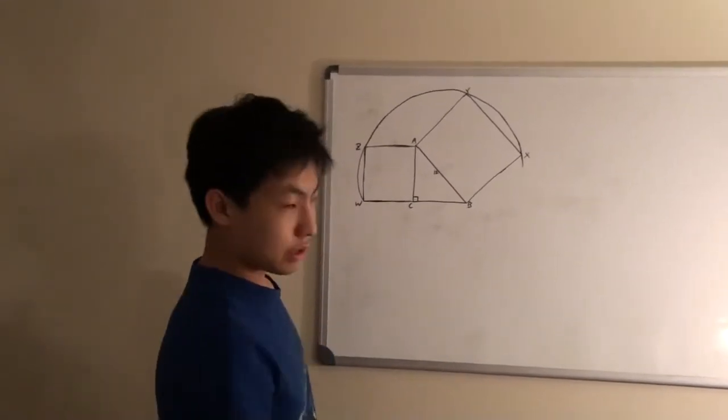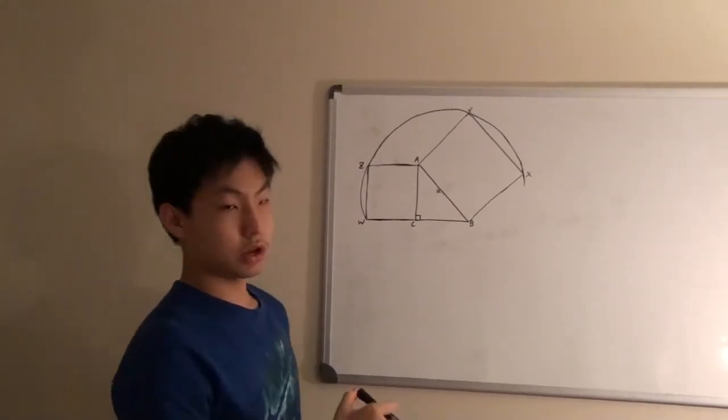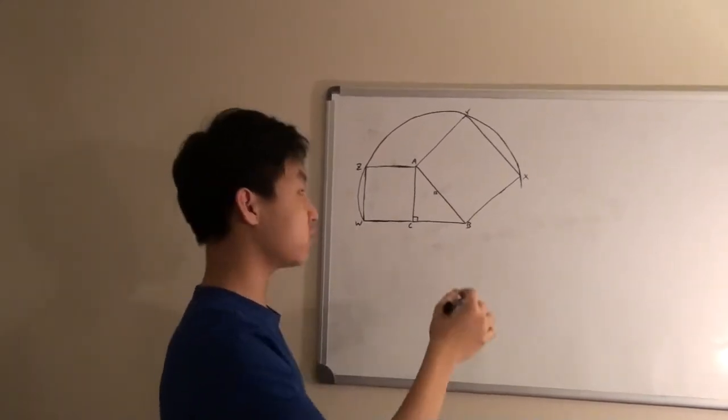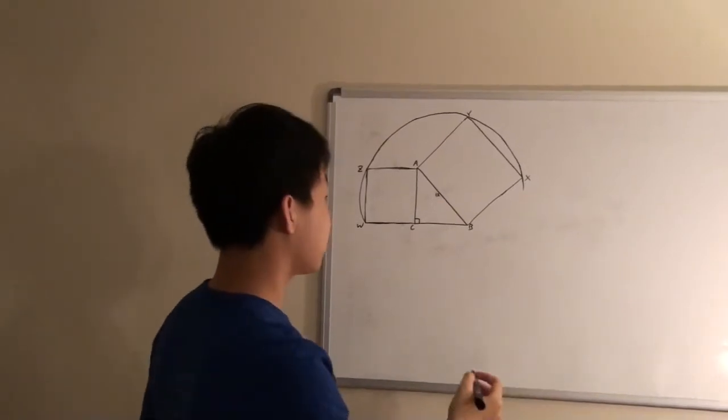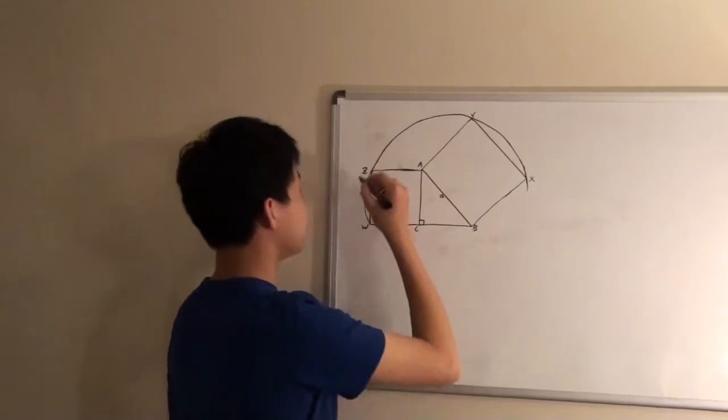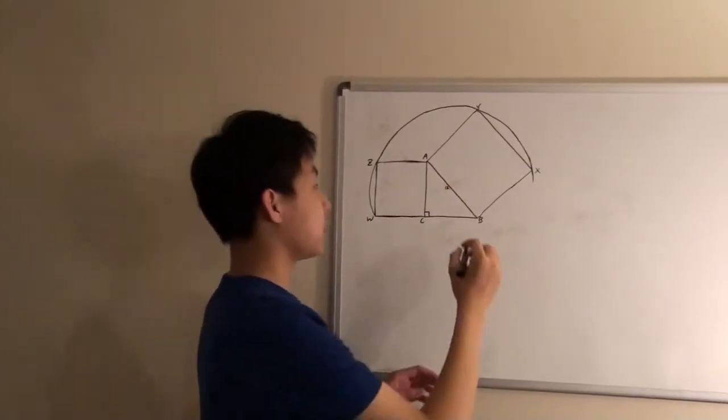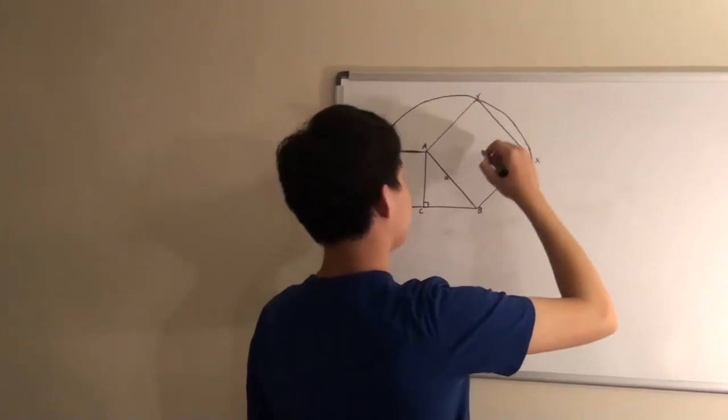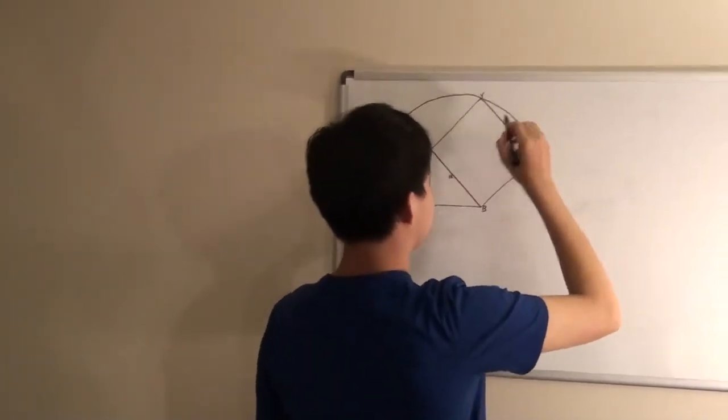So we know that all chords, when having a radius drawn through them, they will be perpendicular. So since XY and WZ are both chords, that means if we draw a perpendicular bisector, then we will get a center point.